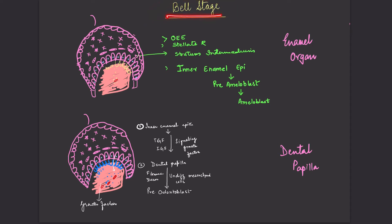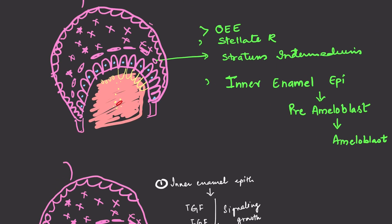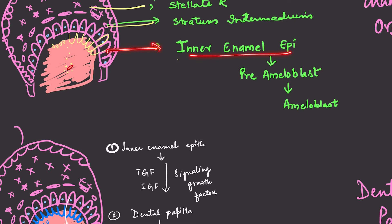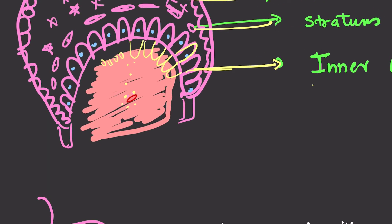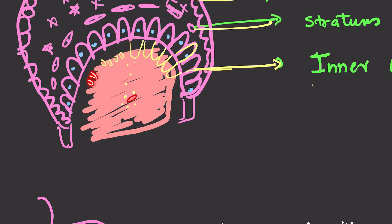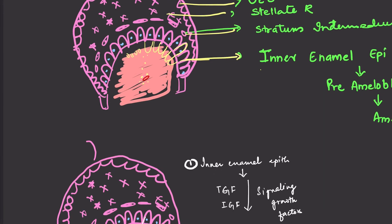Before discussing actual dentine formation, let us review the bell stage of the enamel organ. The enamel organ has four layers: outer enamel epithelium, stellate reticulum, stratum intermedium, and inner enamel epithelium. The inner enamel epithelium cells develop into pre-ameloblasts and ameloblasts. Similarly, in the dental papilla, undifferentiated mesenchymal cells differentiate into pre-odontoblasts, which align along the ameloblast border and further differentiate into odontoblasts.